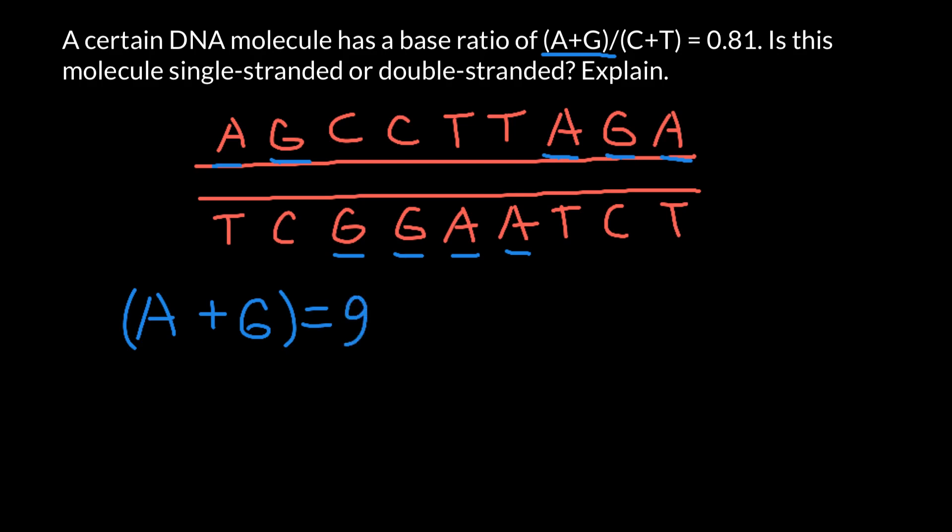Now, let's count how many cytosines and thymines we have here. 1, 2, 3, 4, 5, 6, 7, 8, 9. So we got cytosines plus thymines, and also we got 9.